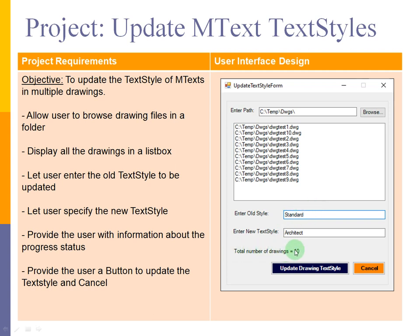This information label will provide the user with progress status and the number of drawings in the specific folder. This button will start the updating of drawing styles, and the cancel button will unload the form. In the next video, we are going to start developing our project.